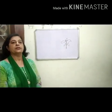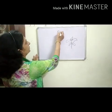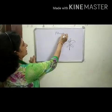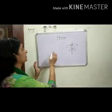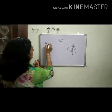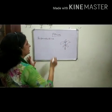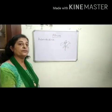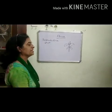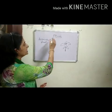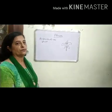Good morning everyone. Today we will discuss about parts of a flower. Flower is the reproductive part of a plant and it is the modification of shoot. Different plants have different types of flowers, but the basic structure of a flower is almost the same in all plants.